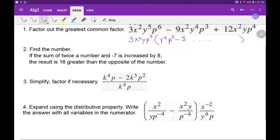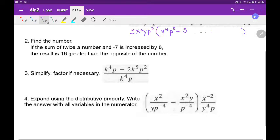Find the number. If the sum of twice a number and negative 7 - the sum of twice a number and negative 7. If I'm adding a negative, it's really like subtracting. The sum of twice a number - a number, twice a number and 7 is increased by 8. I mean, normally I would protect the sum, you know, but since I'm only adding 8, I don't really feel like I need those parentheses.